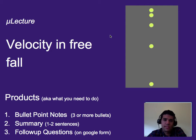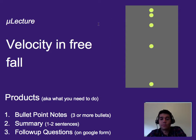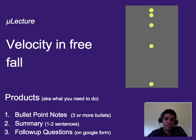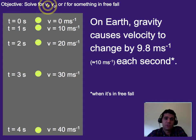Hello again. We're going to talk about velocity while something is in freefall — specifically, what happens to it. Is it changing? Is it going at constant velocity when something is in freefall or being pulled down by gravity without air having too much of an effect? Our objective is to be able to solve for beginning velocity and ending speed, or velocity, or the time it takes for something to reach a certain velocity when it's in freefall.